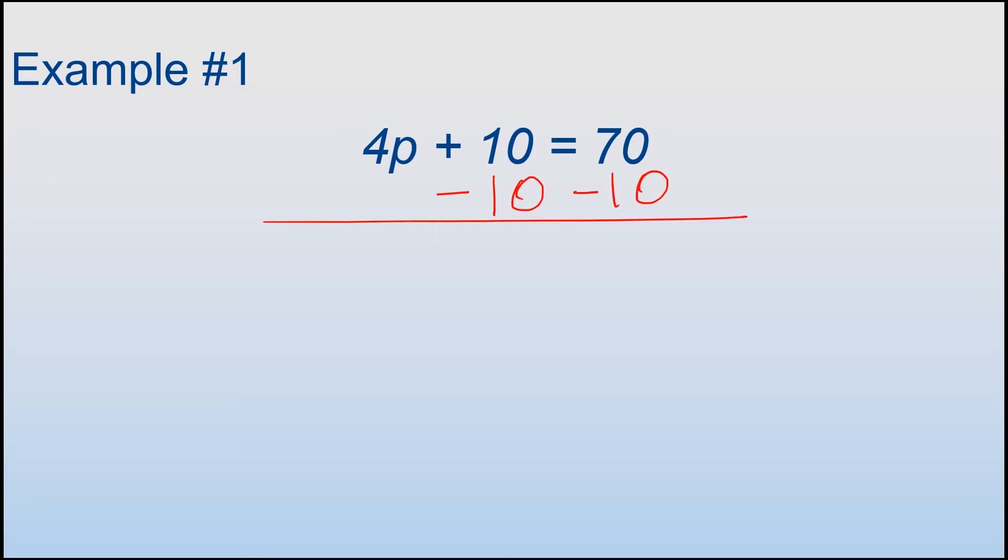This cancels out, so I'm left with 4P equals 70 minus 10, which is 60. Now I need to divide both sides by 4 because right now the relationship between the 4 and the P is multiplication, so the opposite of multiplication is division. So I divide by 4 here, divide by 4 here.